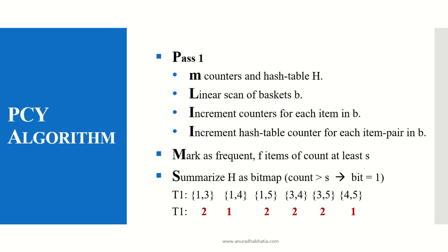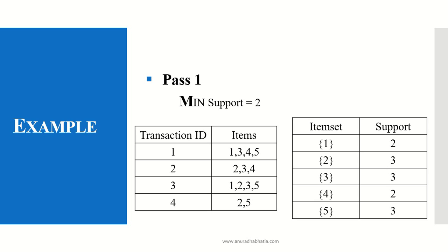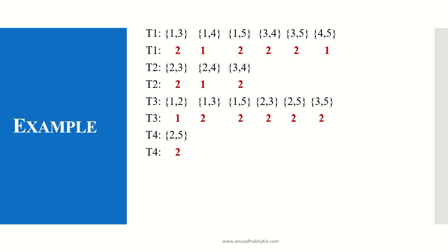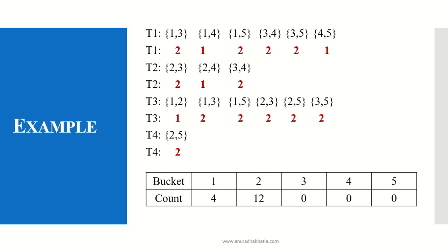The hash table is then summarized. The minimum support is given as 2, and after applying this threshold, we find the support for each item set as listed. All support values at or above the minimum support of 2 are considered. These are the transaction IDs, and with each transaction the available item sets, buckets, and counts are found out for pass 2.